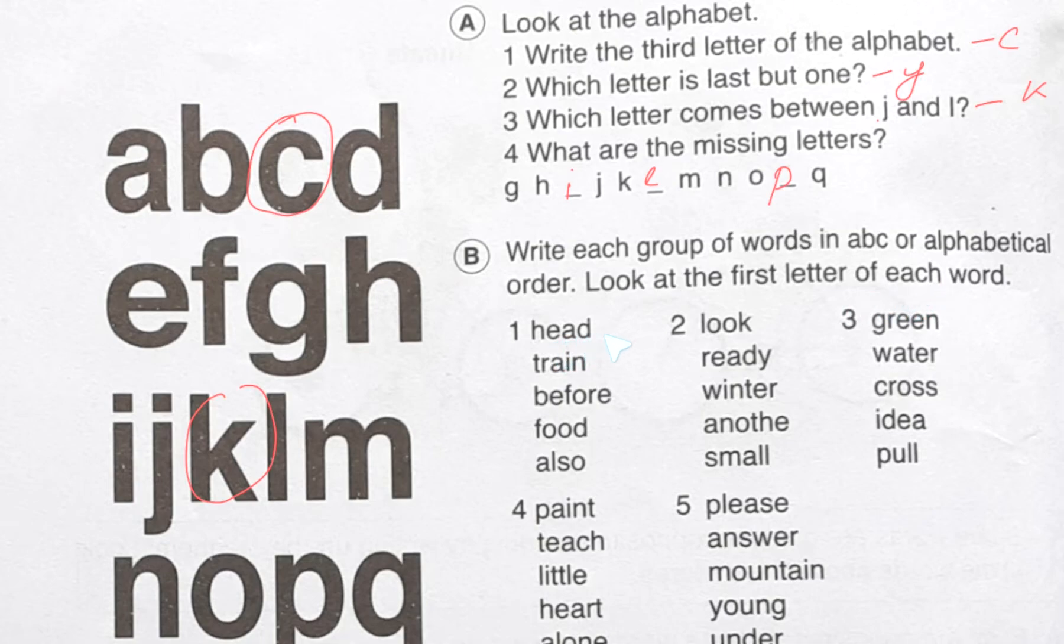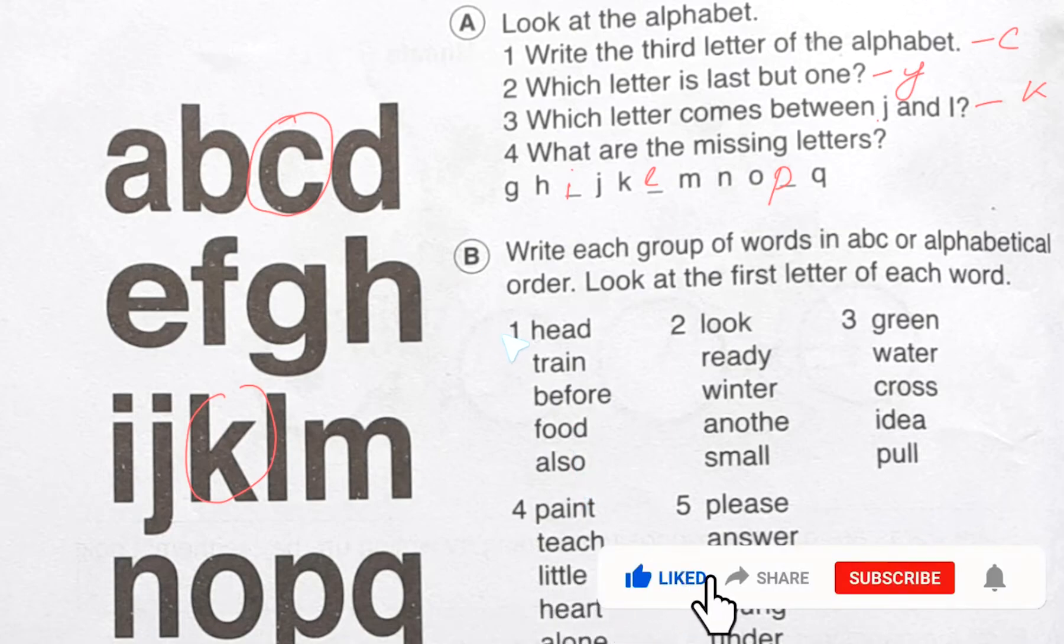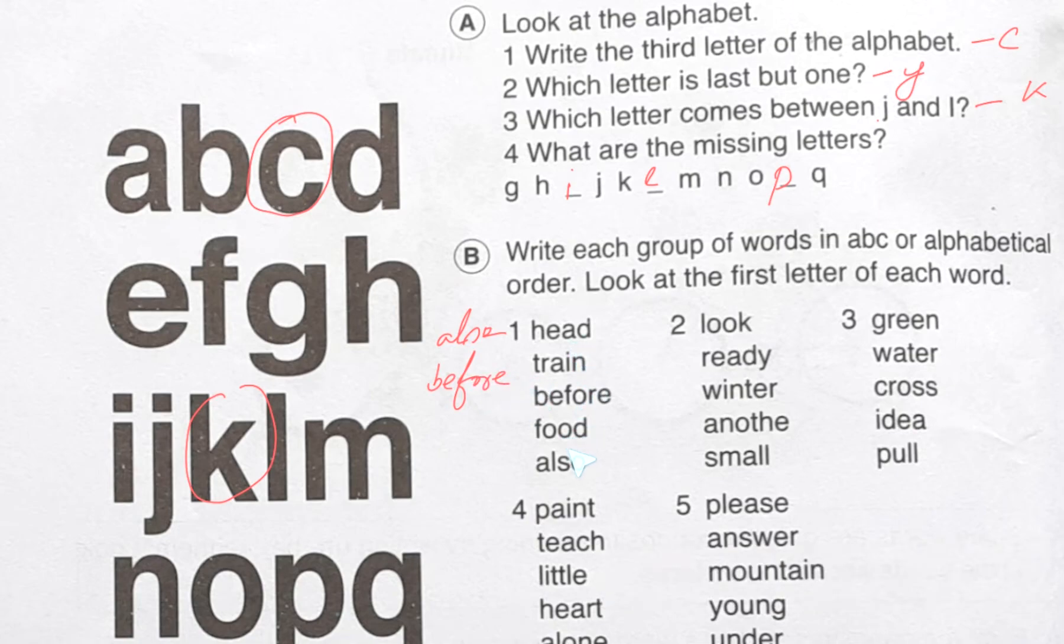Head, train, before, food, also. We know which one will be first - this one, also, will be first. So let's write. Then B - before. First letter A, then B, C, D, E, F - this one, food. E F G H - head. I J K L M N O P Q R S T - train.